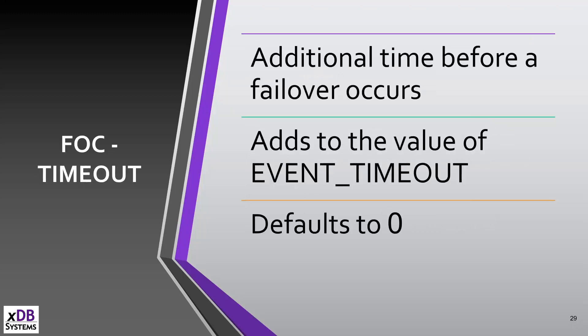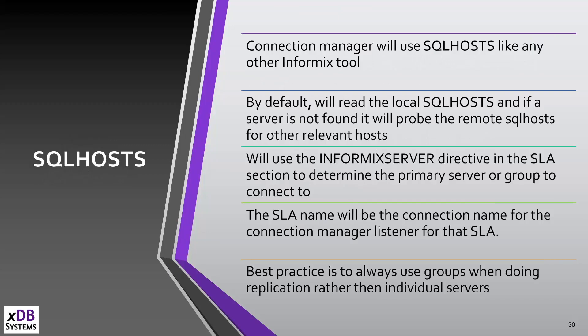Timeout is additional time on top of the CM timeout for a specific cluster — you can give a flaky cluster more time than one that should be rock solid. SQL host, at the cluster level, tells it how to determine what the primary and secondary servers are by querying the sqlhosts value you're looking for — by default it reads local and goes to remote. As a best practice, always use a group rather than pointing to an individual server; it's easier to manage when dealing with replication.